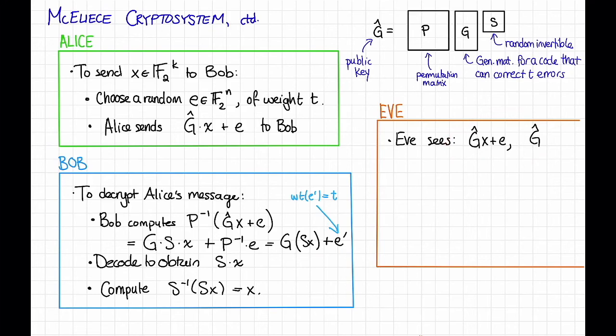So why might we hope that? First, we might hope that G hat looks like a completely random matrix to Eve. Of course, it's not completely random. We started out with this extremely structured matrix, G, the one that admitted this efficient decoding algorithm. But then we scrambled it up.